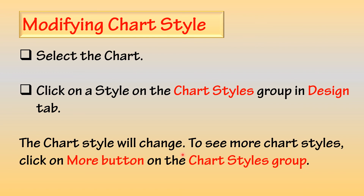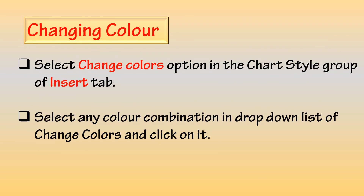To see more chart styles, click on the More button on the Chart Styles group. Changing the color of a chart: We can change the color in two different ways. First, select the Change Colors option in the Chart Style group of the Insert tab, then select any color combination from the drop-down list and click on it.